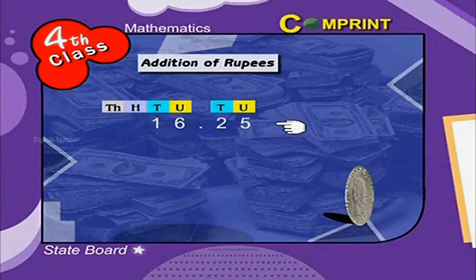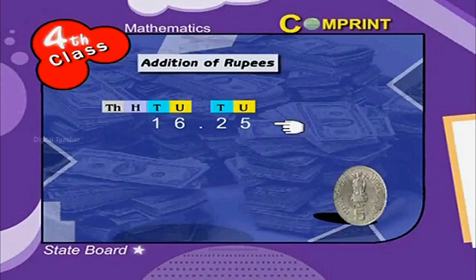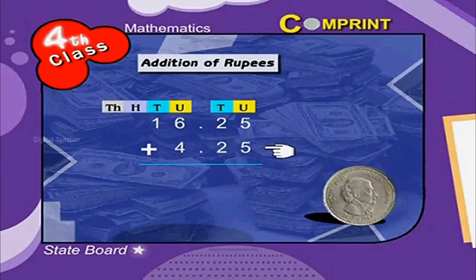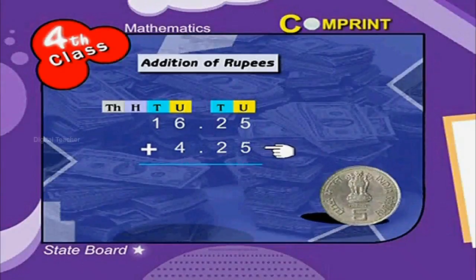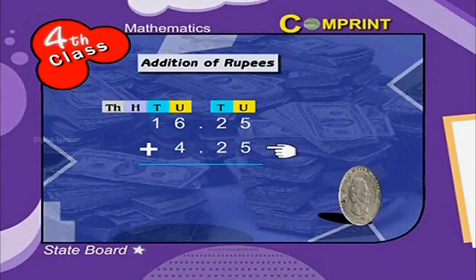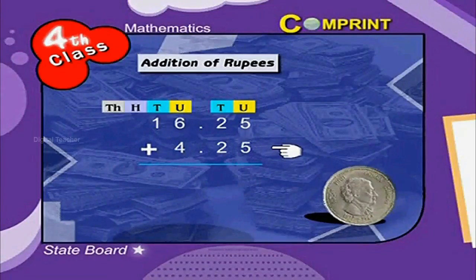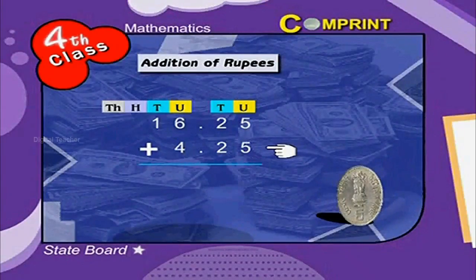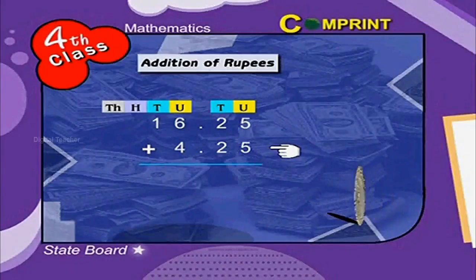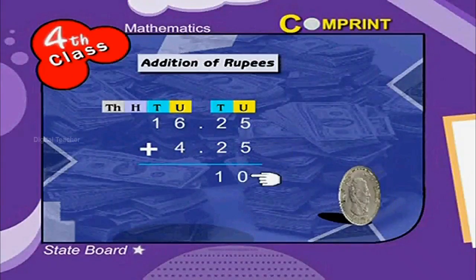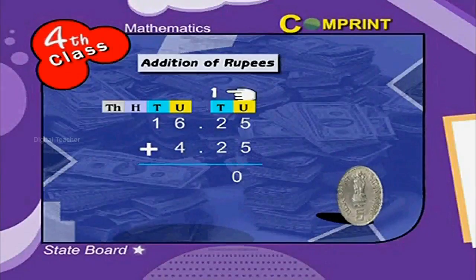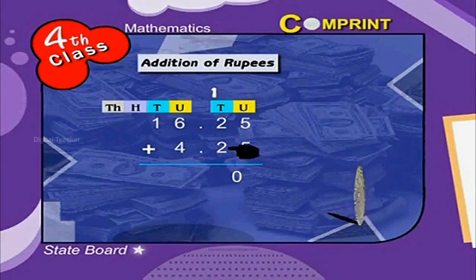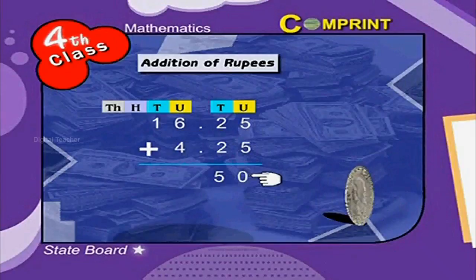Look at the example: 16 rupees 25 paisae plus 4 rupees 25 paisae. We consider the units and tens place as paisae. We add: 5 plus 5 is equal to 10 in the units place. 1 is carried to the tens place. Now add 1 plus 2 plus 2 is equal to 5. It is 50 paisae.